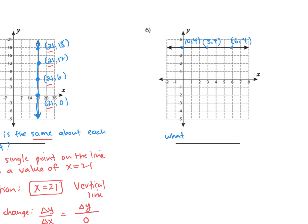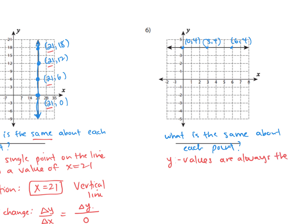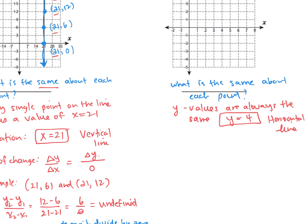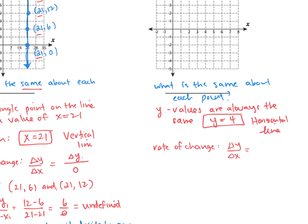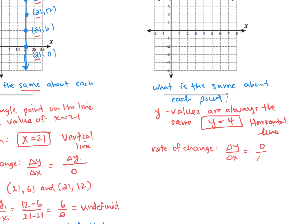So what is the same about each point? The y values are always the same — in every single point, y is 4. And I notice it is also a horizontal line. So what is the rate of change of this horizontal line? Looking at delta y over delta x: since the x changes but the y doesn't, the y changes by zero. This gives us a rate of change of zero, because zero divided by any number is zero.